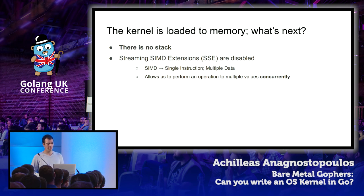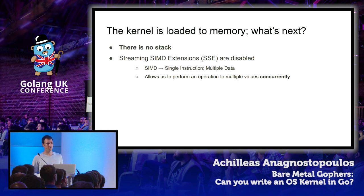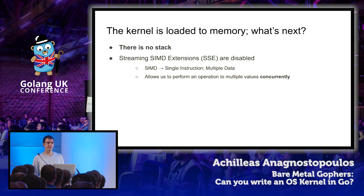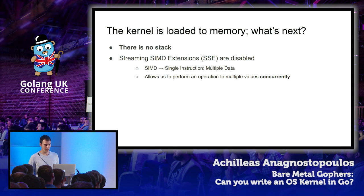To understand how SIMD works, consider a slice of floating point values where we want to increment each element. A naive compiler would iterate and increment one at a time. The Go compiler is smarter and will attempt to apply an optimization known as vectorization — instead of processing one value at a time, it emits SSE instructions that operate on four or eight elements concurrently. Since the Go compiler can emit these instructions, we must explicitly enable SSE support before jumping to our Go code; otherwise the CPU will raise an exception and crash.